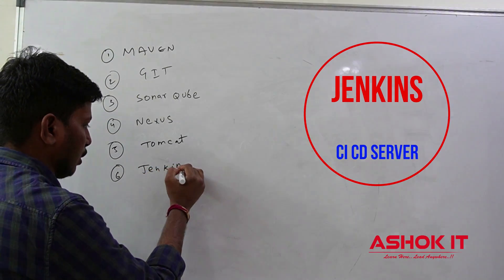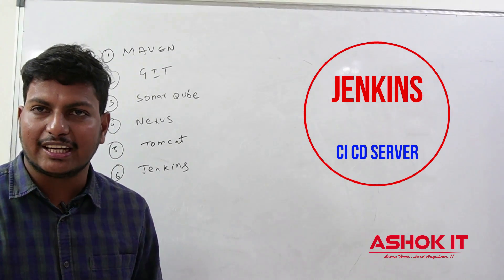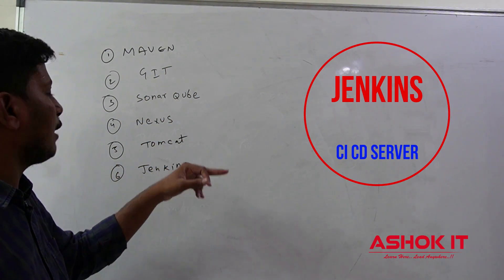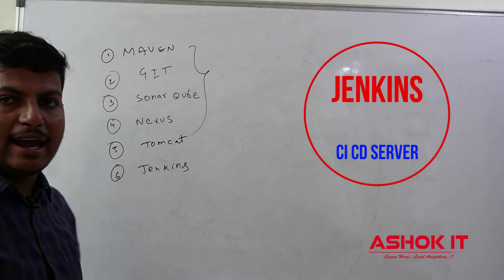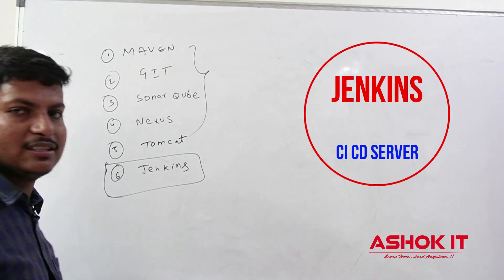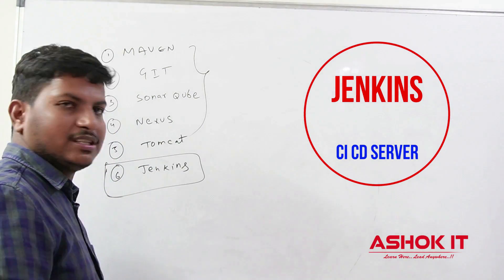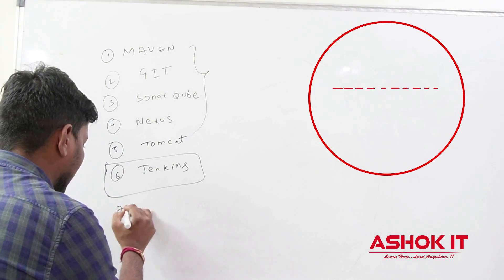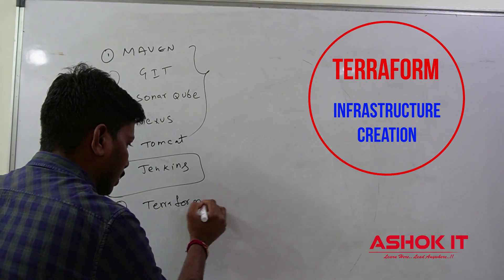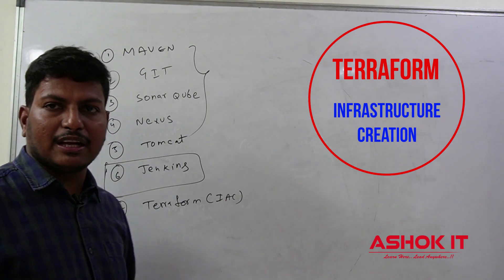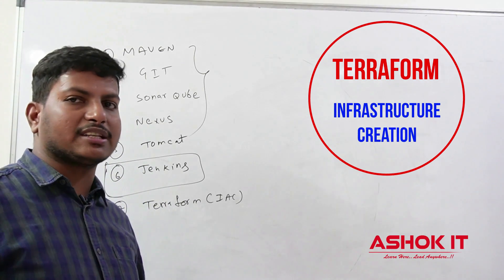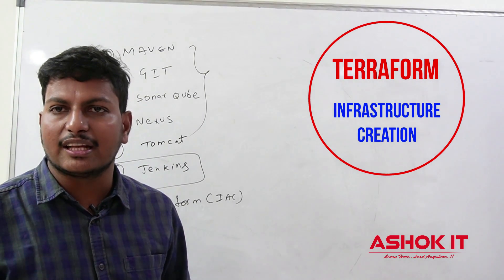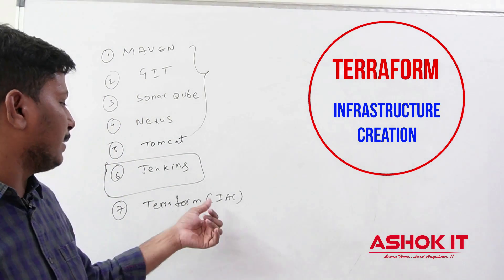Next, Jenkins. Jenkins is called as a CI/CD tool which is used for continuous integration and continuous deployment. Whatever the build process we are doing, code review process, build artifact, code deployment — whatever operations we are doing manually — everything can be automated by using Jenkins. Jenkins is the most important tool for every DevOps engineer. Project build and deployment automation process can be done by using Jenkins. And the next one, we are going to use Terraform. Terraform is called infrastructure as code. Whatever infrastructure we need for our project — the machines required, the storage services required, or the databases required — instead of creating that infrastructure manually, we can automate the infrastructure creation by using Terraform. Terraform will support almost all cloud platforms available in the market.